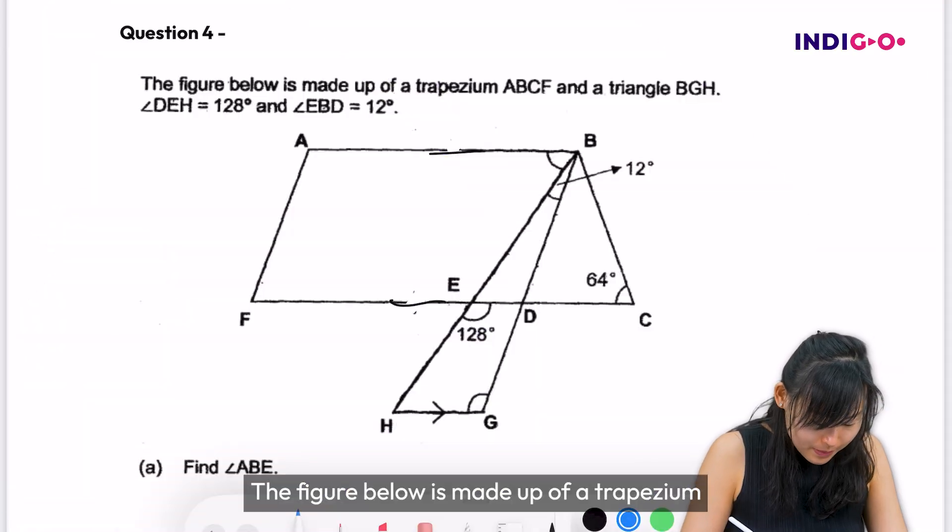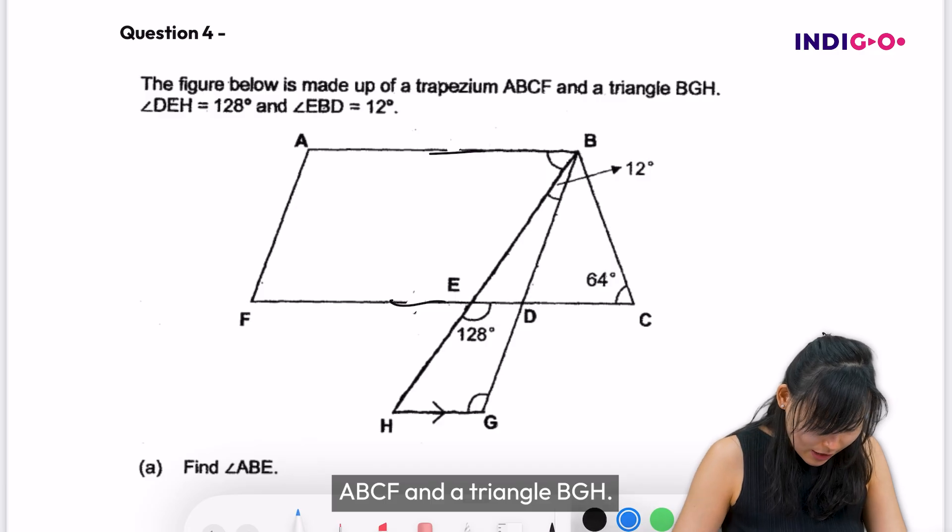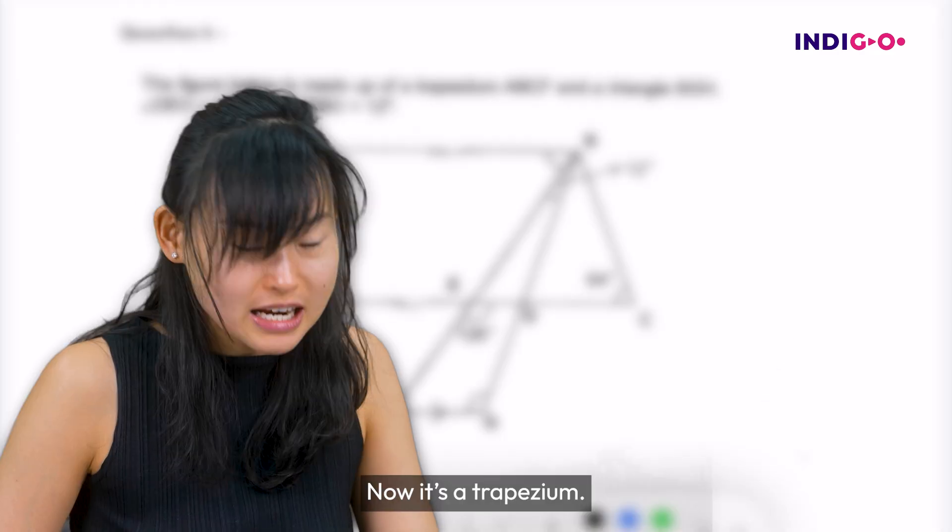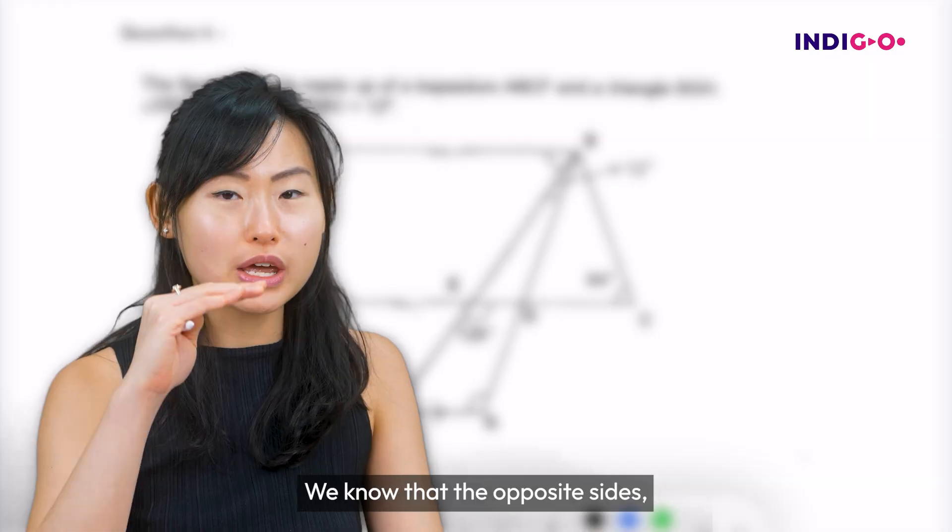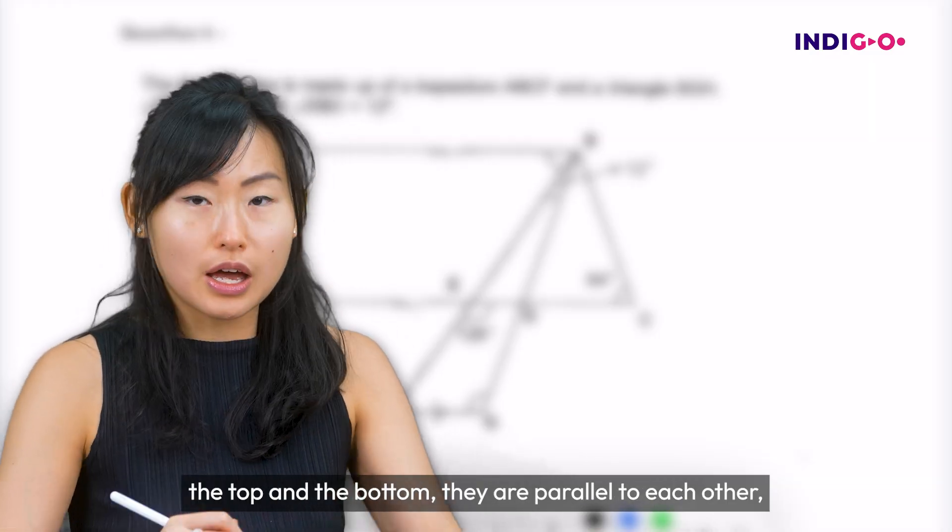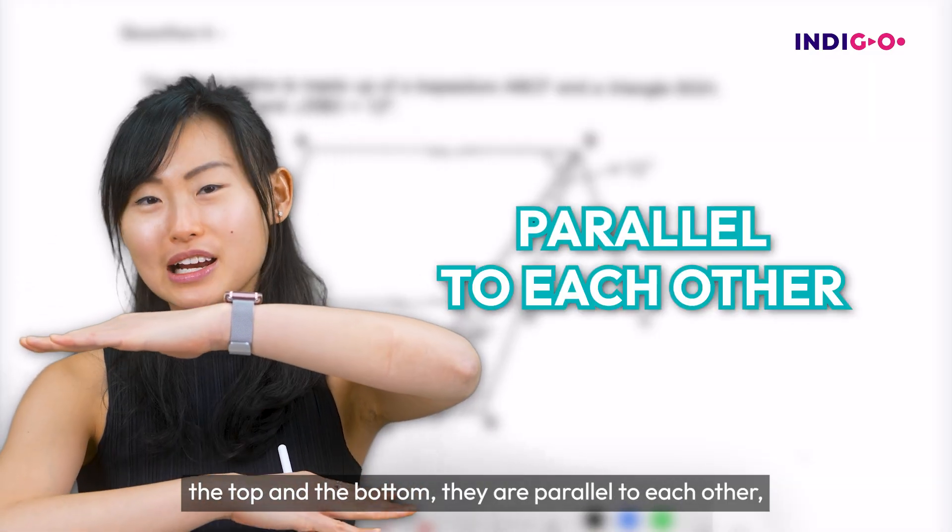The figure below is made up of trapezium ABCF and a triangle BGH. Now if it's a trapezium, we know that the opposite sides, the top and the bottom, they are parallel to each other.